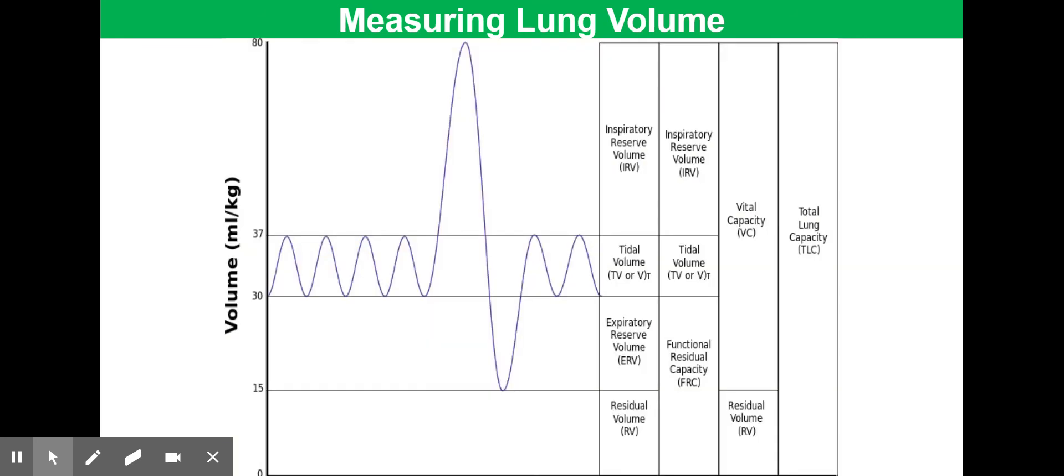This spirometer trace again just labels up these same key terms. Total lung capacity being made up of the vital capacity and the residual volume. We've just come across the tidal volume. And you can also see labelled there things like the inspiratory reserve as well as the expiratory reserve.